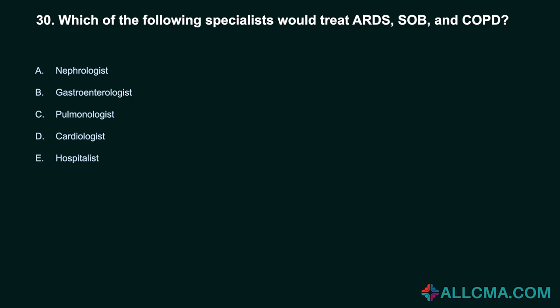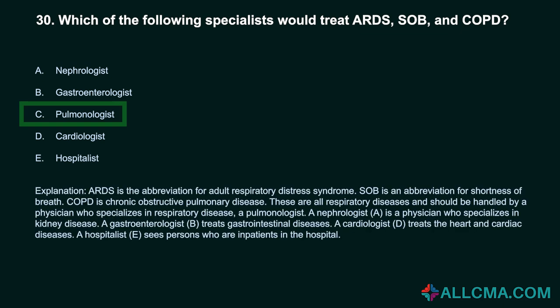Question 30: Which specialist would treat ARDS, SOB, and COPD? a) nephrologist, b) gastroenterologist, c) pulmonologist, d) cardiologist, e) hospitalist. Correct answer: C, pulmonologist. ARDS is adult respiratory distress syndrome, SOB is shortness of breath, and COPD is chronic obstructive pulmonary disease. These are all respiratory diseases handled by a pulmonologist. A nephrologist specializes in kidney disease, a gastroenterologist treats gastrointestinal diseases, a cardiologist treats cardiac diseases, and a hospitalist sees inpatients in the hospital.